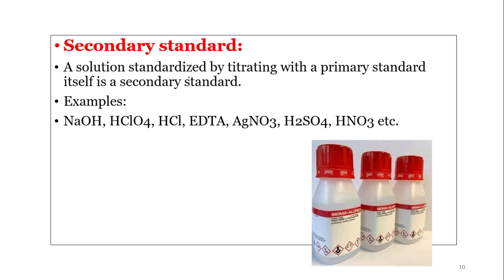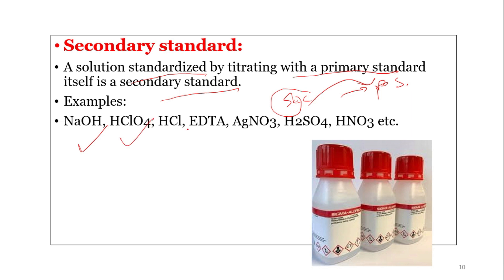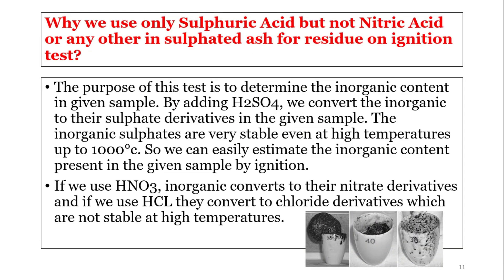A secondary standard is a solution that is standardized by titrating against a primary standard. The secondary standard is titrated with the primary standard and the values are determined. Examples of secondary standards include sodium hydroxide, sodium perchlorate, HCl, EDTA, silver nitrate (AgNO₃), sulfuric acid, and nitric acid.